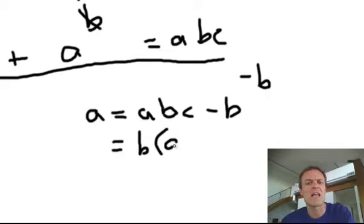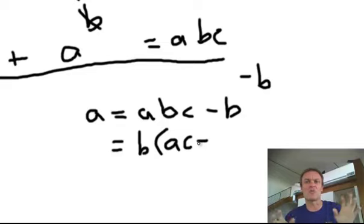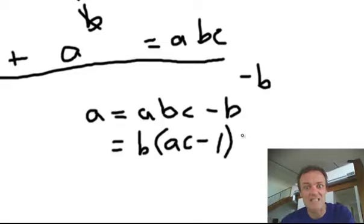What's left is a, c, minus. Now be careful, that b is not gone. Remember when you factor to find out what's left, you do a little division. Okay? So if I pull a b out of a b, b divided by b is 1. Do the distributive law to check if you need to, alright? And that still equals a.